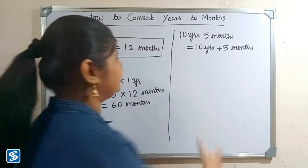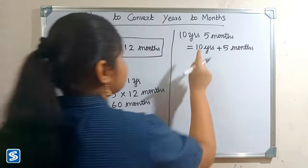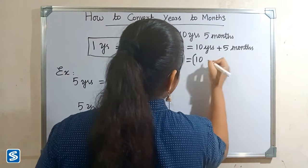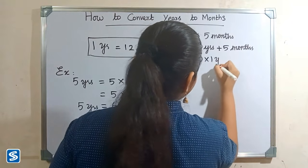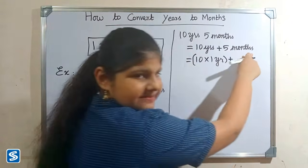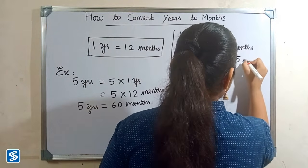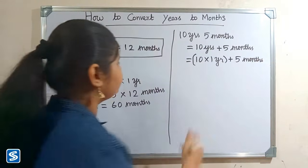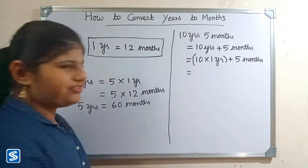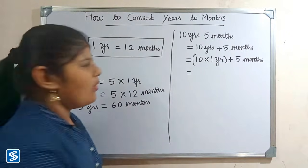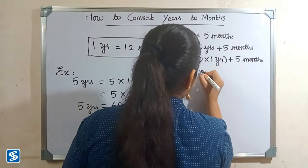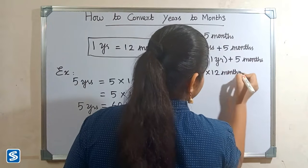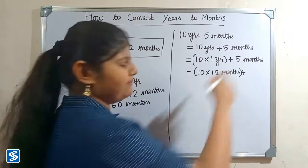Now we have to convert this 10 years into months. So 10 years can be written as 10 multiply one year plus 5 months. Next we have to substitute 12 months in the place of one year, so 10 multiply 12 months plus 5 months.